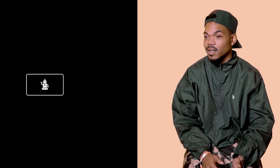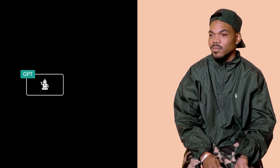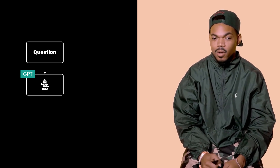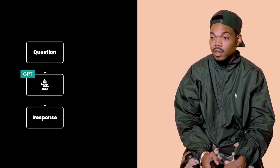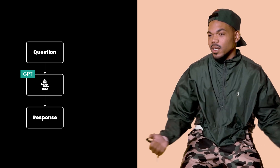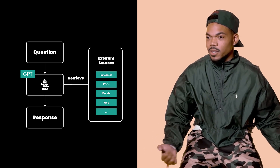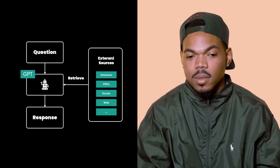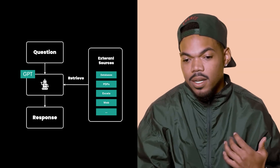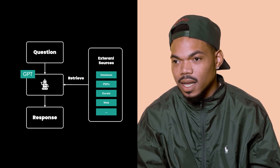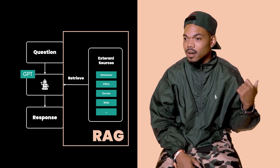Imagine yourself having a conversation with an AI, like ChatGPT, that can not only accept a question and generate a textual response, but can also retrieve information from external sources in real time to make its responses more accurate, informative, and up-to-date. That's what RAG is all about.